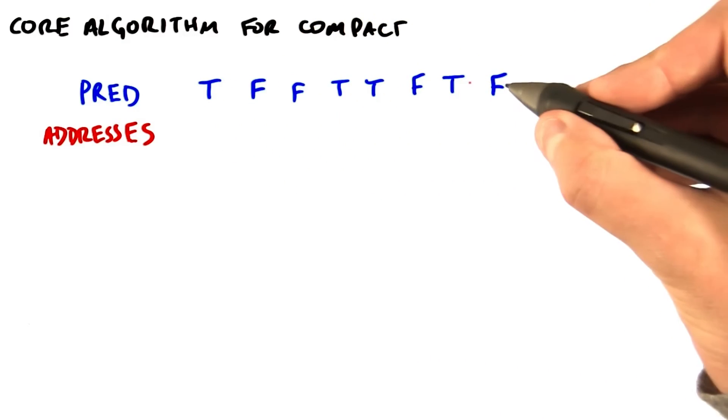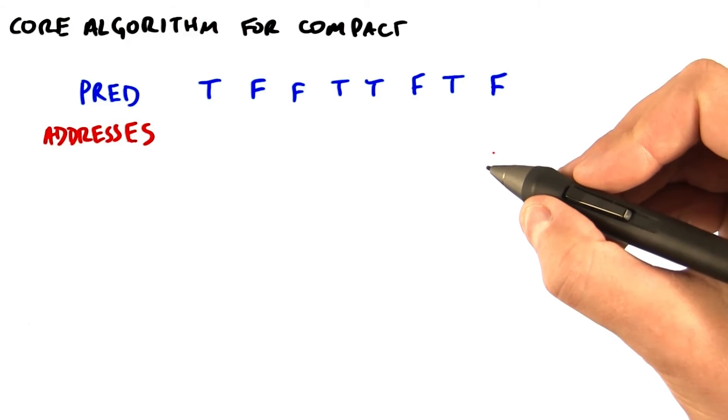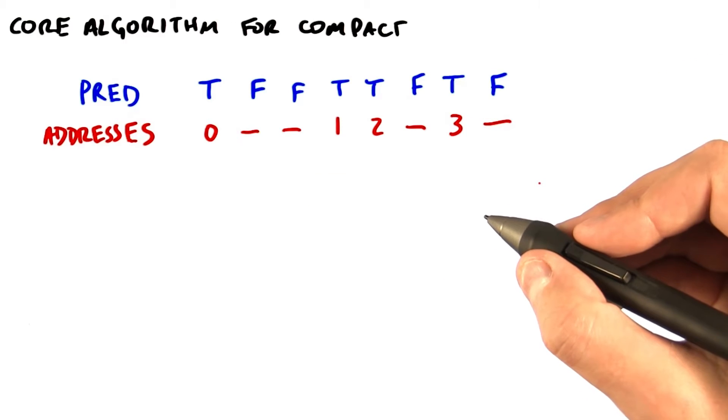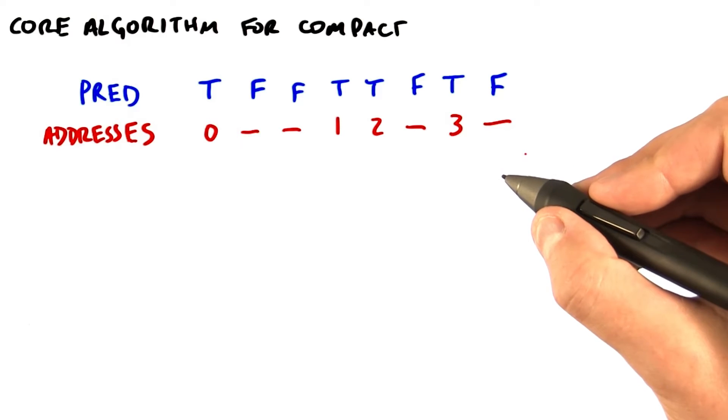We're going to have a set of predicates here: true, false, false, true, true, false, true, false. And what we need to do is compute the scatter addresses that will result from this string of predicates. Since we don't care about the scatter addresses for the false values, we'll just put a dash for don't care. Our algorithm is going to generate something here. It just doesn't matter what it generates.